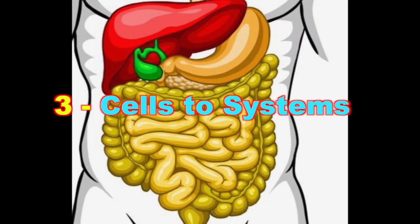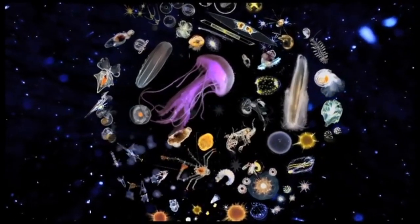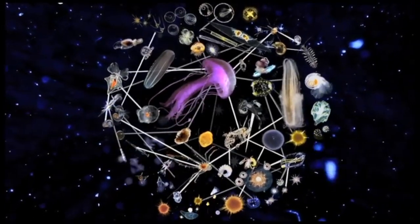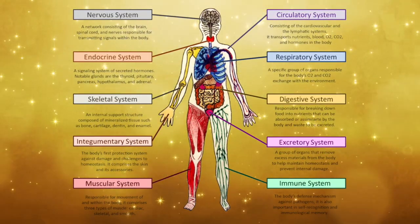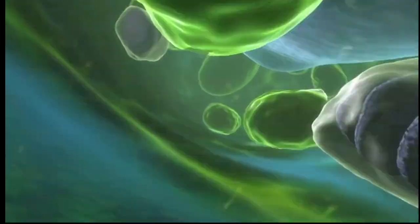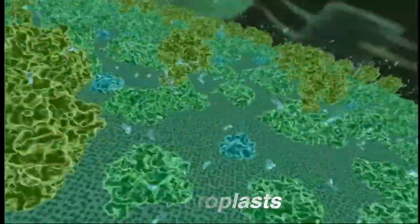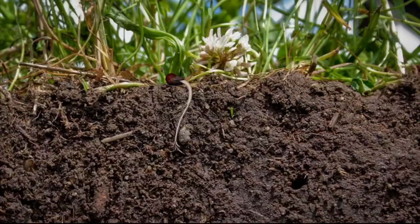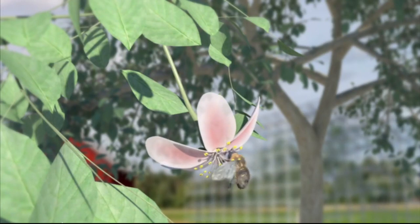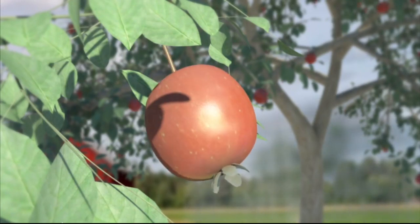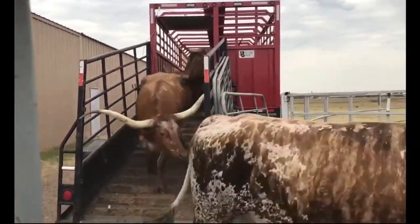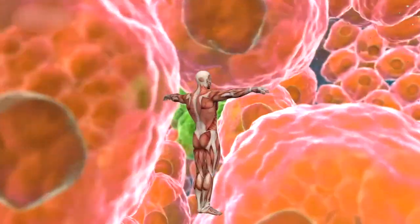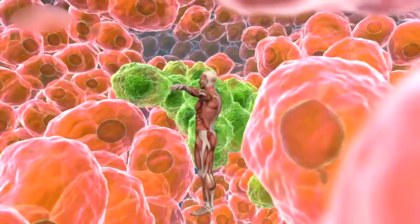Cells to Systems. Cells join together to make more complex life forms. Cells that work together are called a system. Green cells and leaves collect sunshine to power the whole plant. Plants have different systems from roots to fruits.